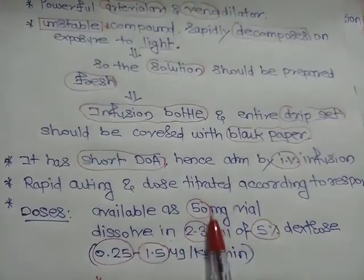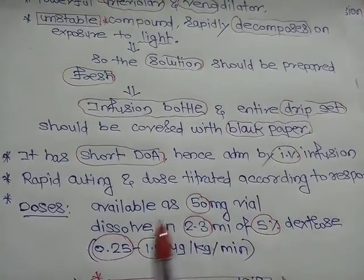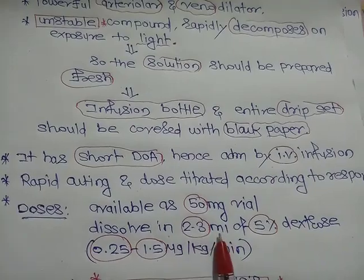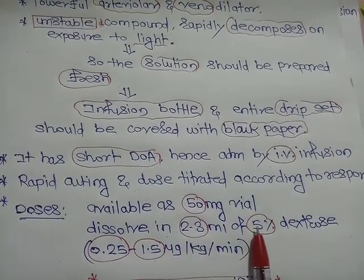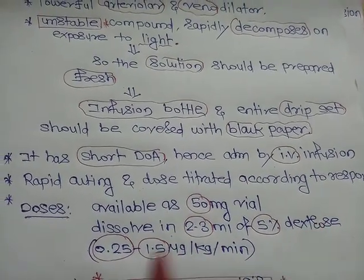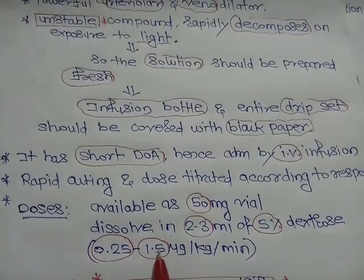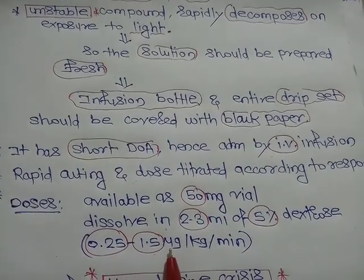It is available as a 50 mg vial which is dissolved in 2 to 3 ml of 5% dextrose, and the dose is 0.25 to 1.5 micrograms per kg per minute.